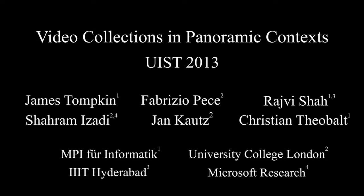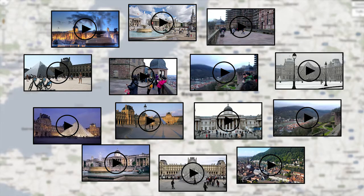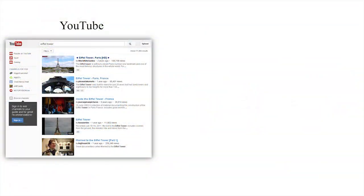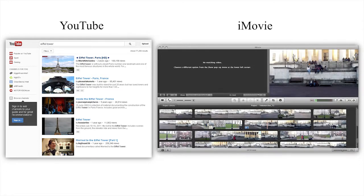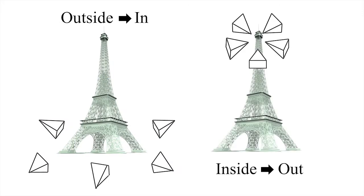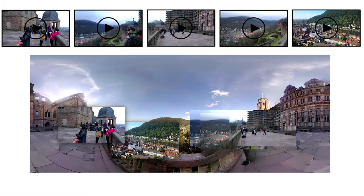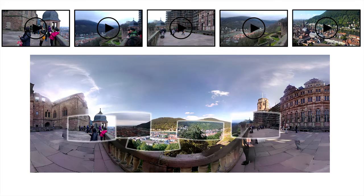Video Collections in Panoramic Contexts. With geotagging, it is easy to assemble a video collection of a place which shows both the moment-to-moment comings and goings and the longer changes over days, months, and years. Interfaces to video collections often fail to make these spatiotemporal relationships apparent. Recent state-of-the-art interfaces attempt to solve this problem for outside-in datasets, but these approaches cannot handle inside-out datasets where there is no necessary overlap between neighboring videos. Instead, we embed video collections within panoramic contexts using sensor data from mobile phones and vision-based visual fitting for alignment.